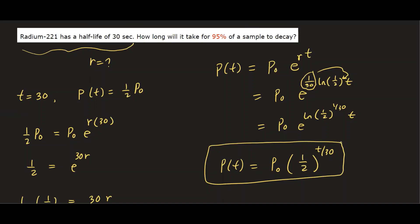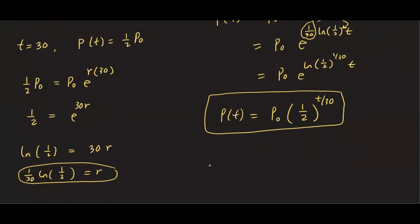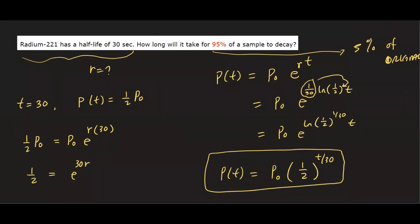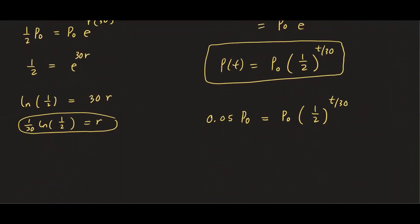Now we can answer the question: how long will it take for 90% of the sample to decay? That means only 10% — wait, actually 5% — of the original remains. So we set up: 0.05·P₀ = P₀·(1/2)^(T/30). Dividing both sides by P₀: 0.05 = (1/2)^(T/30).